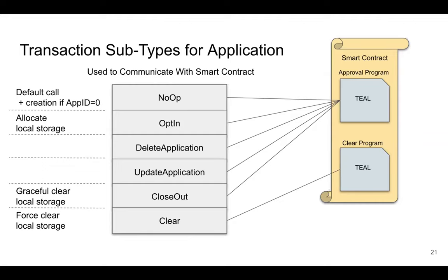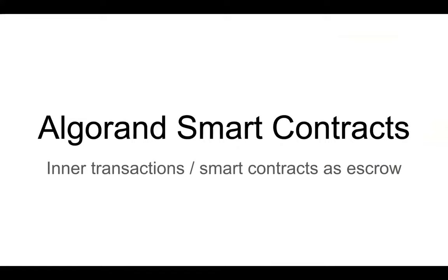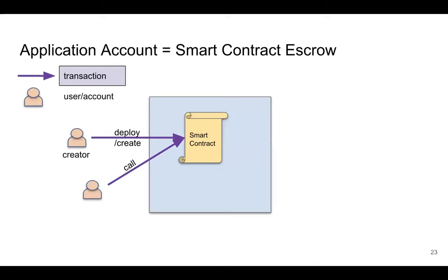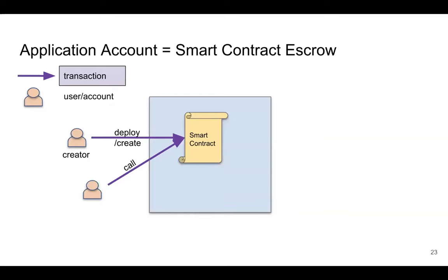Delete and update transactions do exactly what you'd think — delete the application or update its code. So we've seen what smart contracts look like and how they access storage, but we haven't seen how they get tokens. Remember in the crowdfunding example, people need to send money to the smart contract — how does that work? And how does the smart contract send tokens out? On Algorand, a smart contract is associated with an application account.